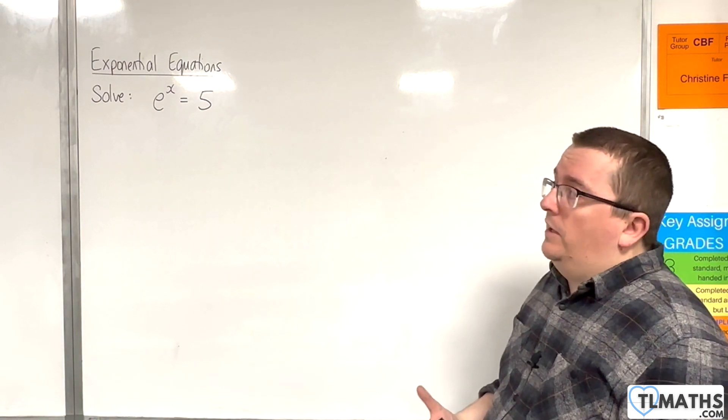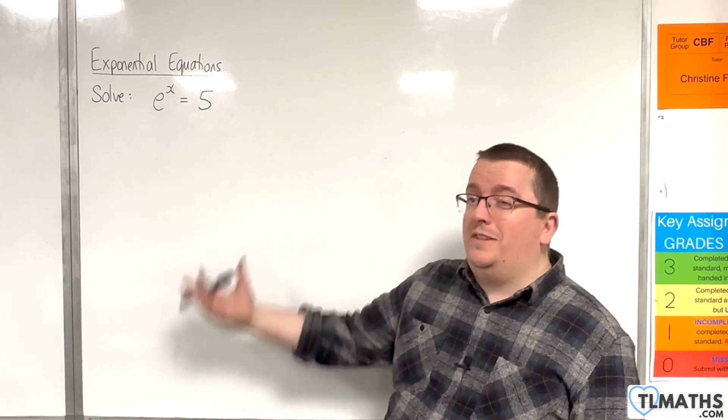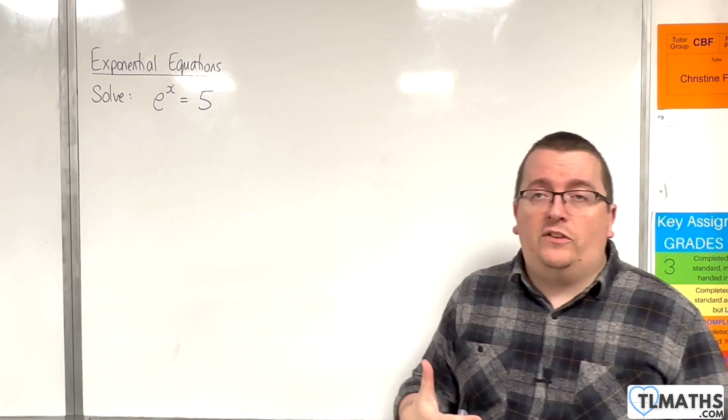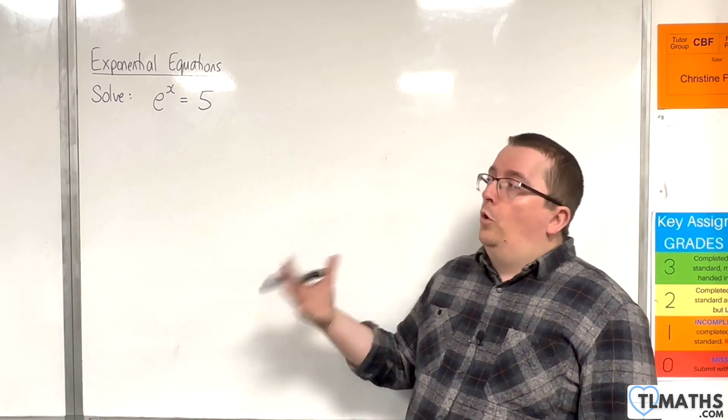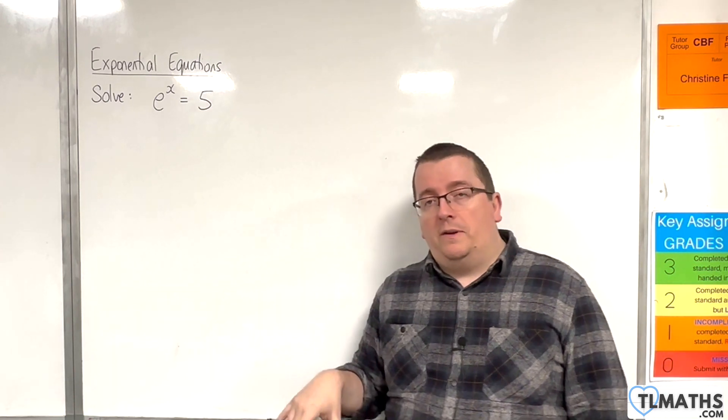And the way that we would tackle an equation like this, such as 2 to the x equals 5, or 3 to the x equals 5, is we would log both sides, or convert it from exponential to logarithmic form.